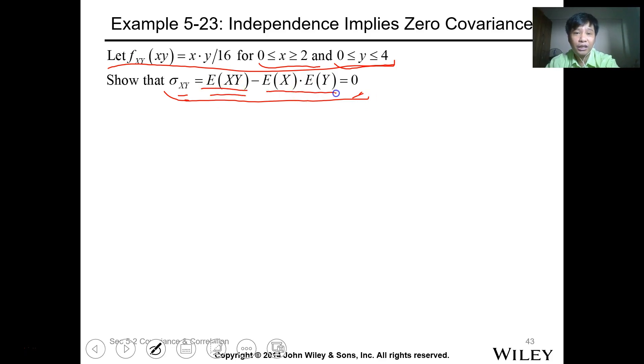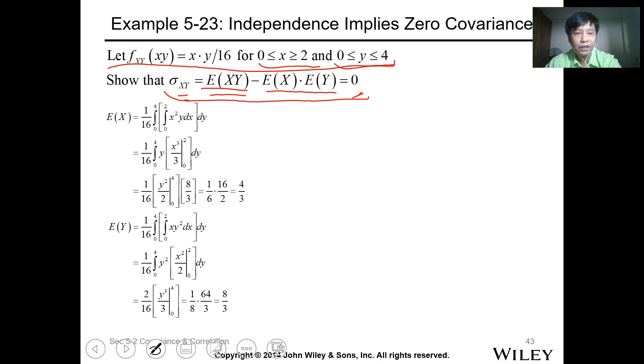Show that the standard deviation of xy equals 0. We need to get the expected value of xy, the expected value of x, and expected value of y. For expected value of x, I won't do it individually because you're familiar. Multiply this by x - this is x times f(x,y), then integrate for that value.